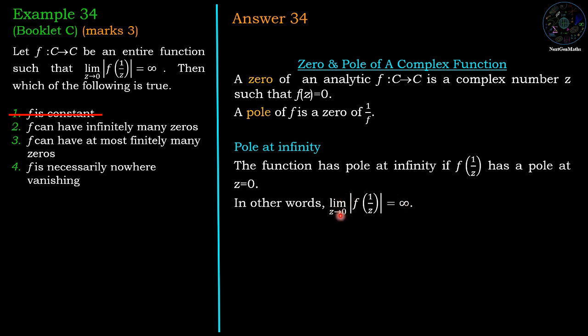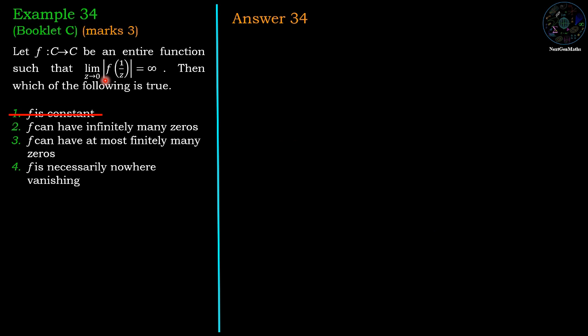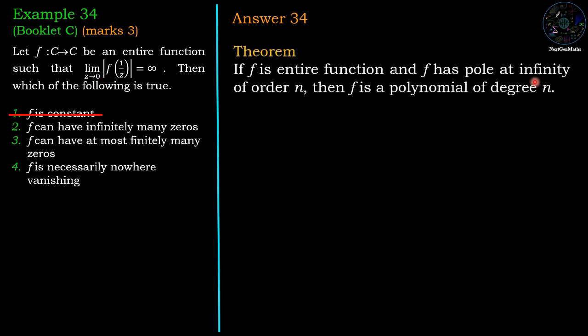But this condition is given in the example - that means the given entire function has pole at infinity. Now we are going to recall one statement: If f is entire function and f has pole at infinity of order n, then f is a polynomial of degree n. That means f(z) = a₀ + a₁z + a₂z² + ... + aₙzⁿ.